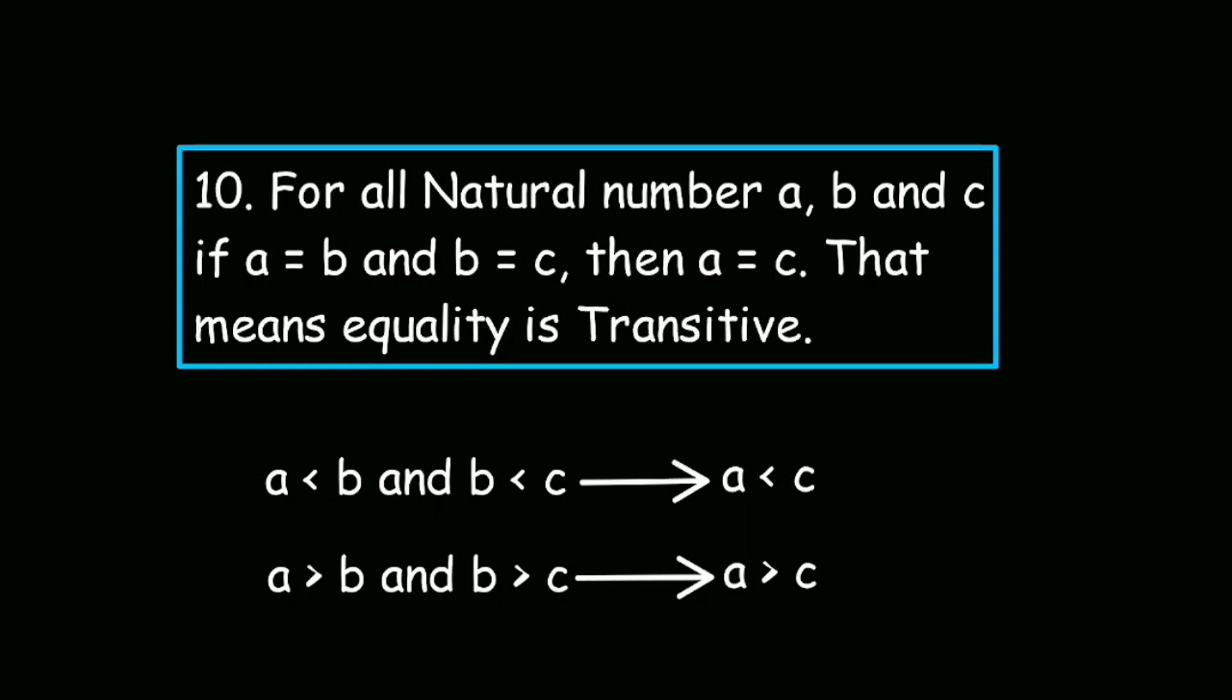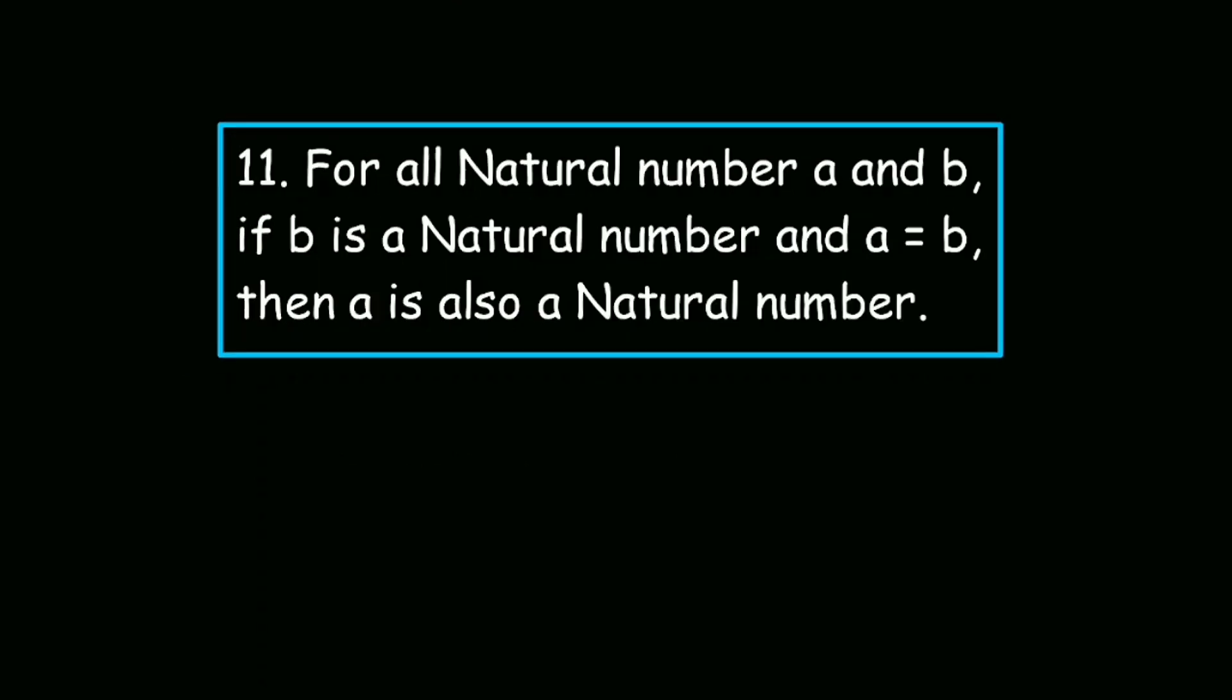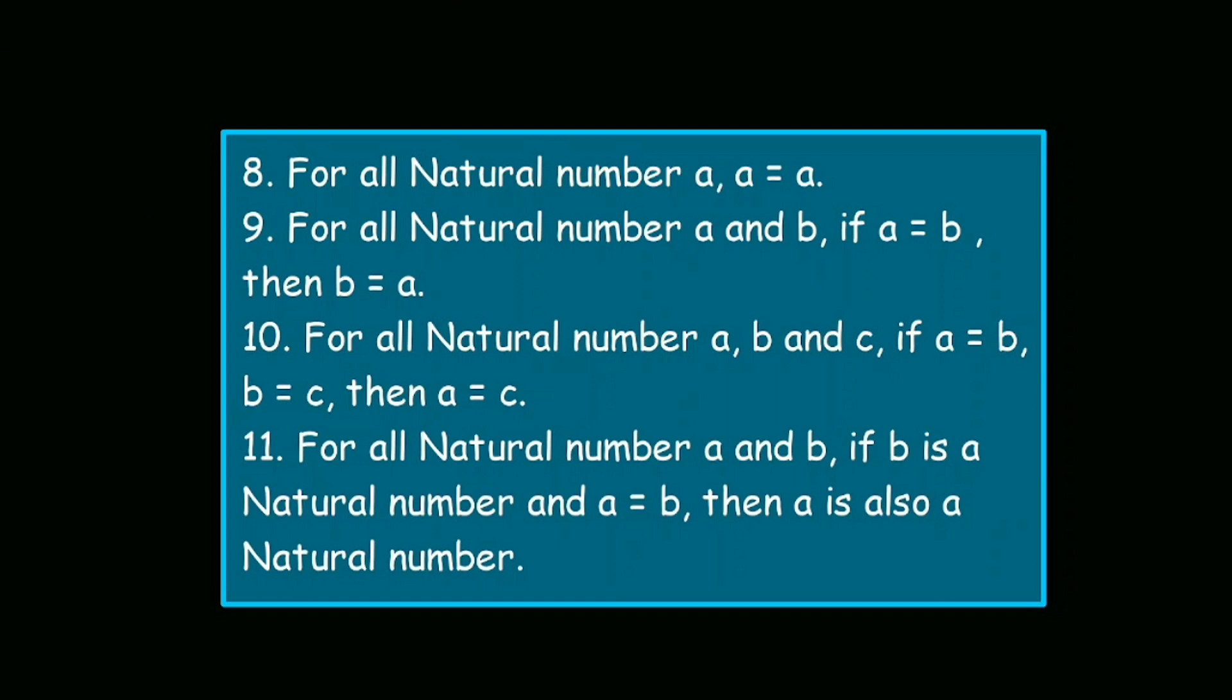And our final axiom to define equality is, for all natural numbers a and b, if b is a natural number and a is equal to b, then a is also a natural number. These four axioms are defining characteristics of equality relation. Now that we defined everything, we are almost ready to jump into our proof. But before that, we have to talk a little bit about something called the rule of inference.